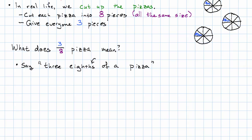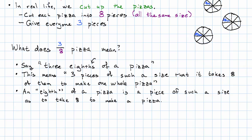What does it mean to have 3 eighths of a pizza? Well, it means to have 3 pieces of such a size that it takes 8 of them to make one whole pizza. So 1 eighth is just one such piece. It's just one piece sized so that it takes 8 of them to make a pizza. And then when we say we have 3 eighths, we simply mean that we have 3 such pieces.